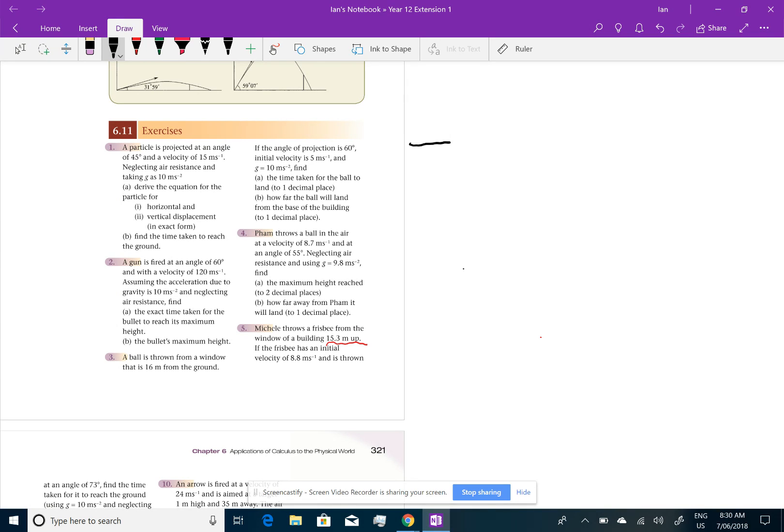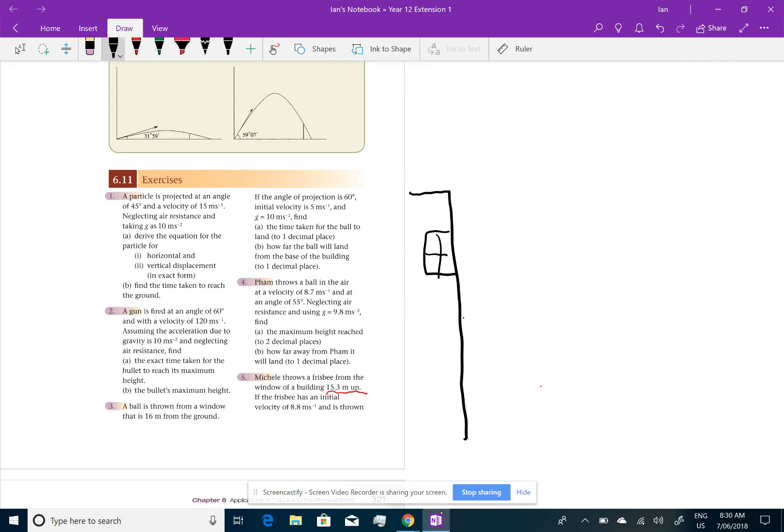So let's get a diagram of this. I always find drawing a diagram useful. So let's say Michelle's in this building, and she's in a window, and she's going to throw this Frisbee out, and it's going to follow the path of a projectile. Now, that's going to be our initial velocity, and we're going to break it up into its vertical and horizontal components. We know the angle is 73 degrees, and we know that the initial velocity is 8.8.